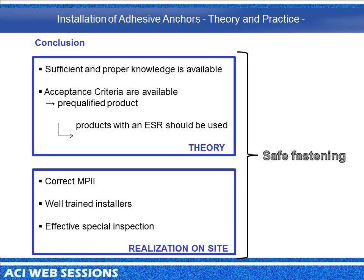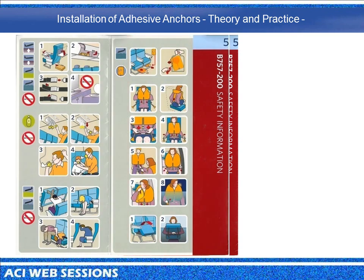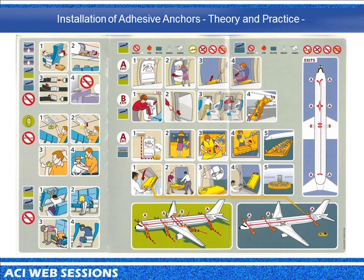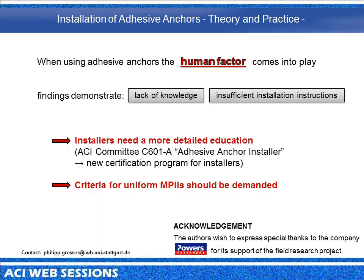In summary, there is sufficient and proper knowledge available to ensure reliable fastenings with adhesive-bonded anchors. Detailed acceptance criteria are available to test suitability — only products with an ESR number should be used. What we need are correct manufacturer's product installation instructions, well-trained installers, and effective special inspection to ensure safe and reliable fastenings. As an analogy, airplane safety instructions contain a lot of information but are absolutely clear — many pictures, self-explaining. Manufacturer's product installation instructions should aspire to the same clarity. When using adhesive anchors, the human factor comes into play.